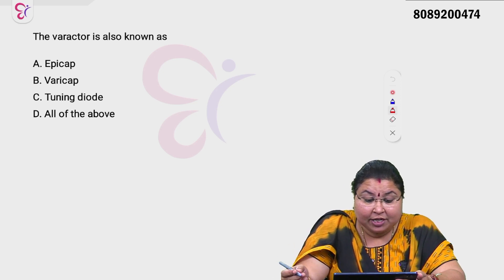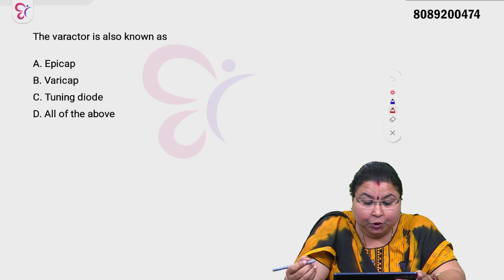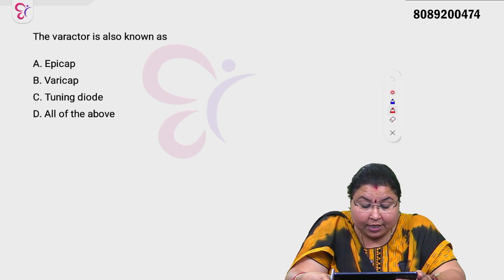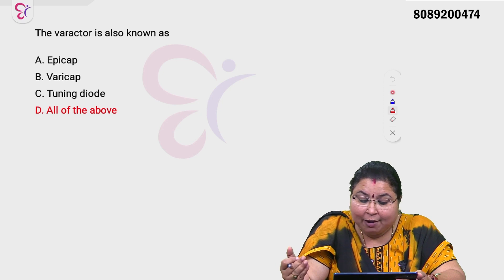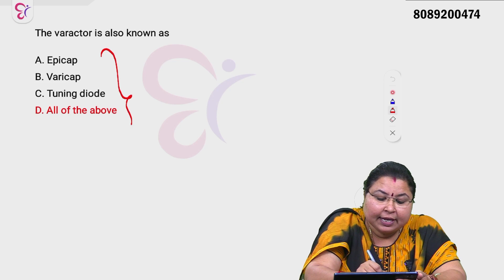The varicap is also known as: Option A epi-cap, Option B varicap, Option C tuning diode, and Option D all of the above. The varicap diode is also known as epi-cap, varicap, and tuning diode — so Option D, all of the above, is correct.